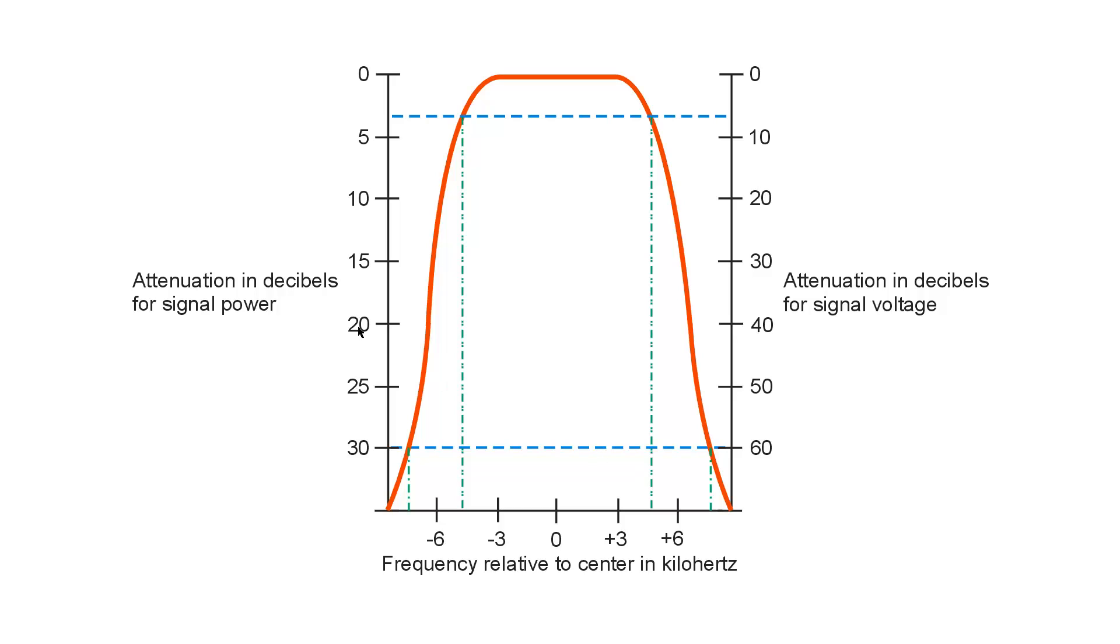So, the 3 to 30 decibel shape factor in terms of power or the 6 to 60 decibels shape factor for voltage, you can calculate, would be 10 divided by 14 and a half. Or, you might say the 30 to 3 decibel factor would be 14 and a half divided by 10, well, that would be 1.45.